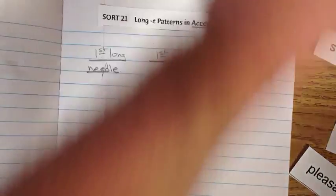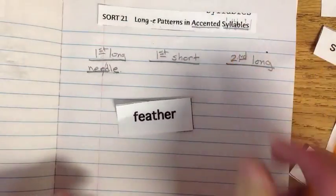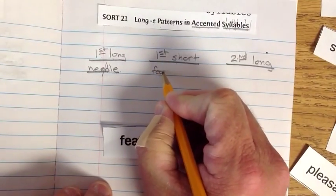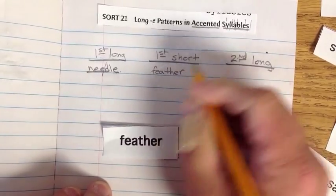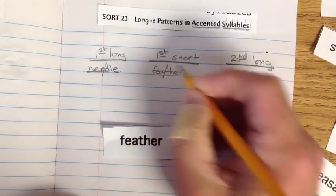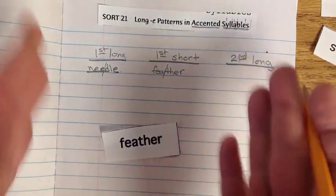Let's go to the first short. Let's do a word like feather. F-E-A-T-H-E-R. Feather. Feather. So I'm going to put the line right there. Feh. Feather.